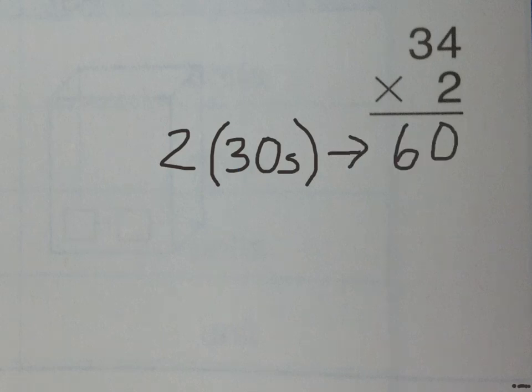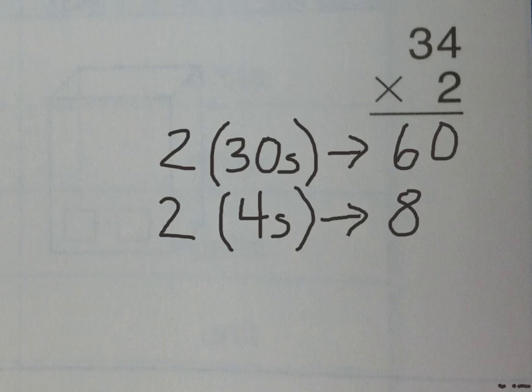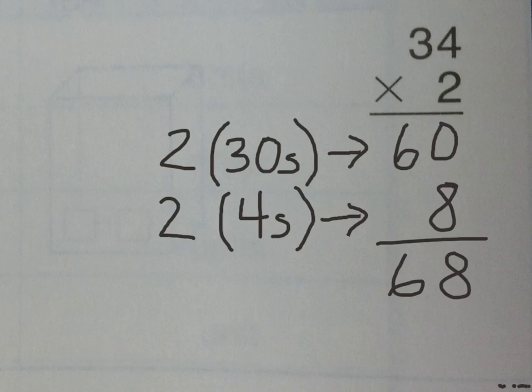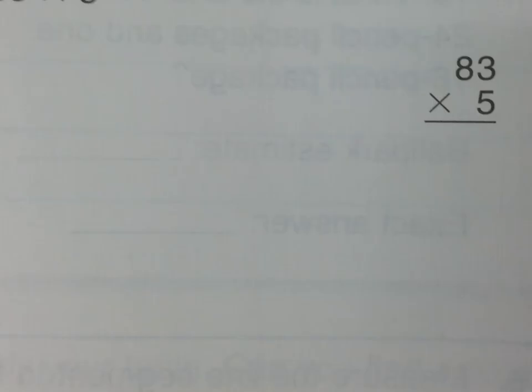Then we do 2 times the ones place, which is 4. 2 times 4 is 8. When we write 8, we want to make sure it lines up in the ones place, not the tens place. Then we add the numbers together. 34 times 2 is 68.